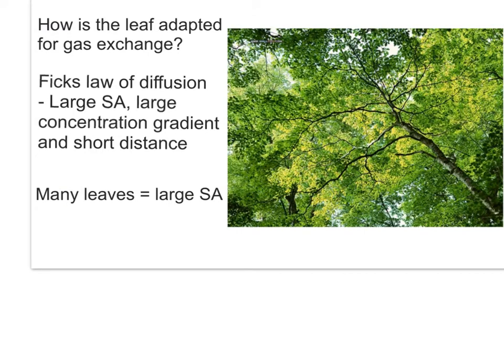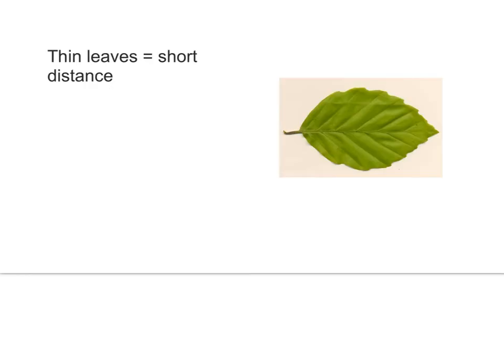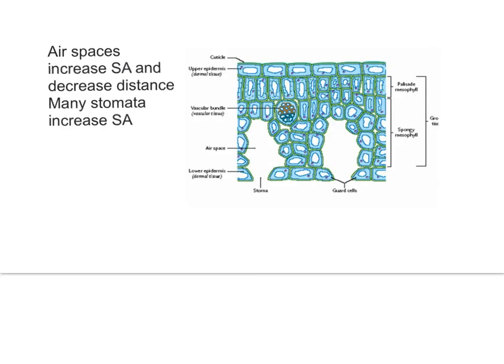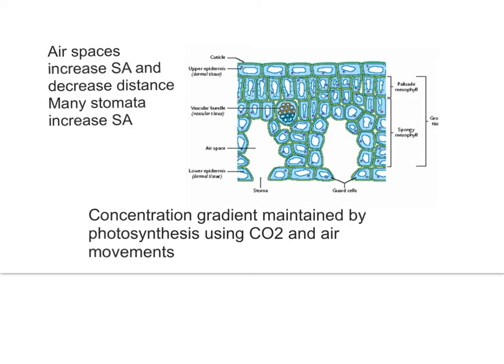Trees particularly have lots of leaves, giving a large surface area for gas exchange. Each individual leaf is very thin and flat, which means it has a large surface area and, because it's thin, a short diffusion distance. Many air spaces increase the surface area available for diffusion and also decrease the distance between the air and the palisade mesophyll cells. Lots of stomata on the lower epidermis allow the diffusion of gases by increasing the surface area available. A concentration gradient is maintained by photosynthesis during the day, which rapidly uses up carbon dioxide, keeping a low CO2 concentration in the palisade mesophyll and ensuring a continual gradient. Air movements such as wind also continually replenish fresh air around the leaves.